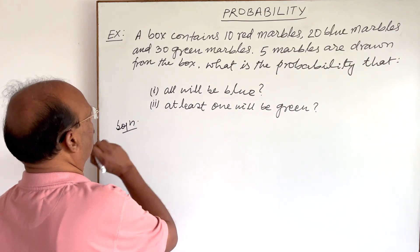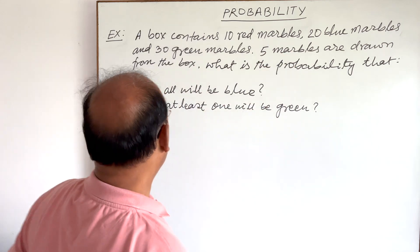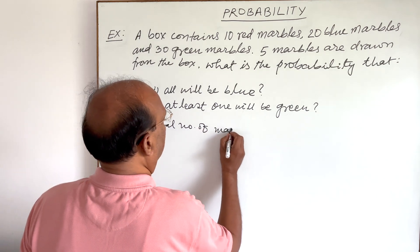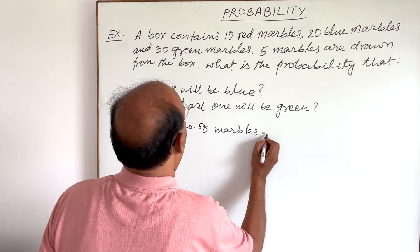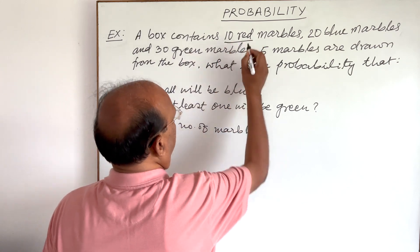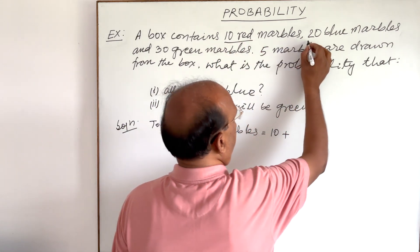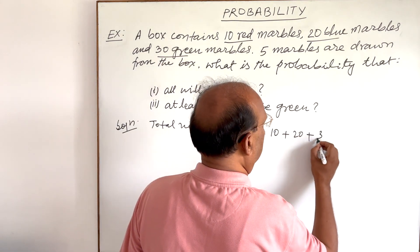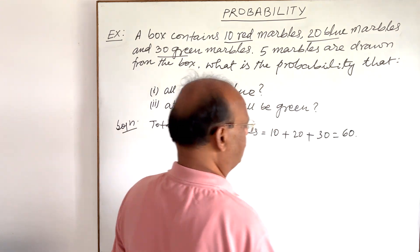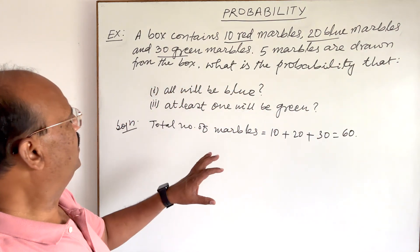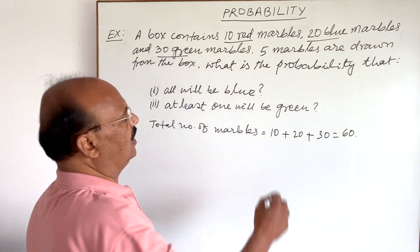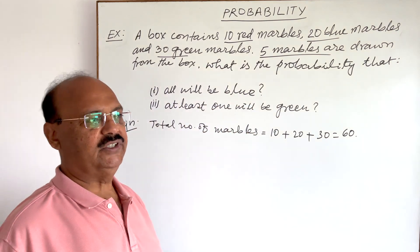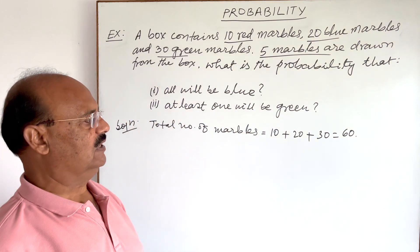The total number of marbles is equal to 10 red marbles plus 20 blue marbles plus 30 green marbles, which equals 60. Out of these 60 marbles, five marbles are drawn. For the first case, what is the probability that all five marbles drawn will be blue?